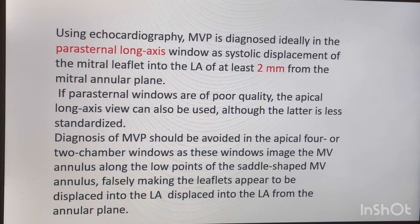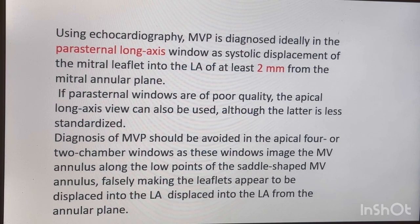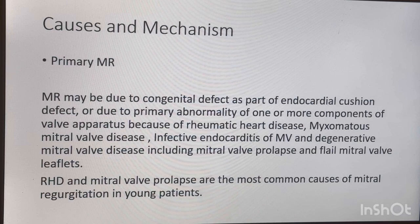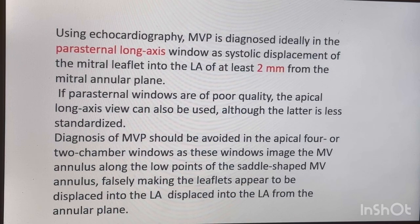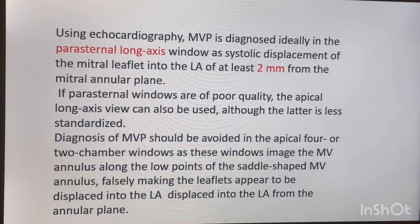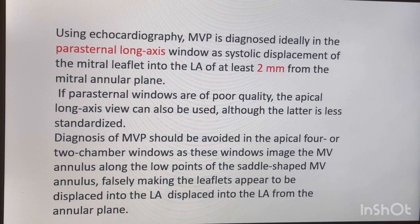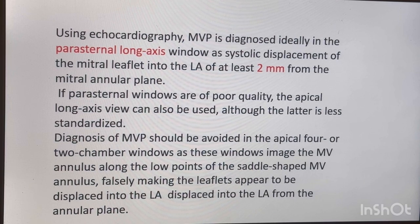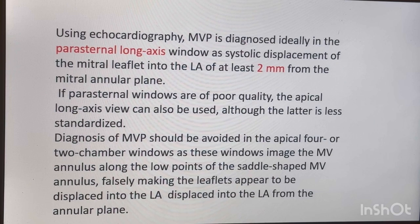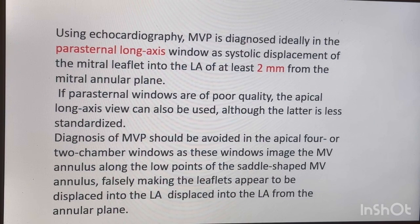You draw an imaginary annulus line between the anterior and posterior annulus and see which scallop goes beyond 2 mm — that is called mitral valve prolapse. Try not to make the mitral valve prolapse diagnosis in apical views because the mitral valve is a saddle-shaped structure and you might see some billowing there. It is best to call it in the parasternal long axis image.